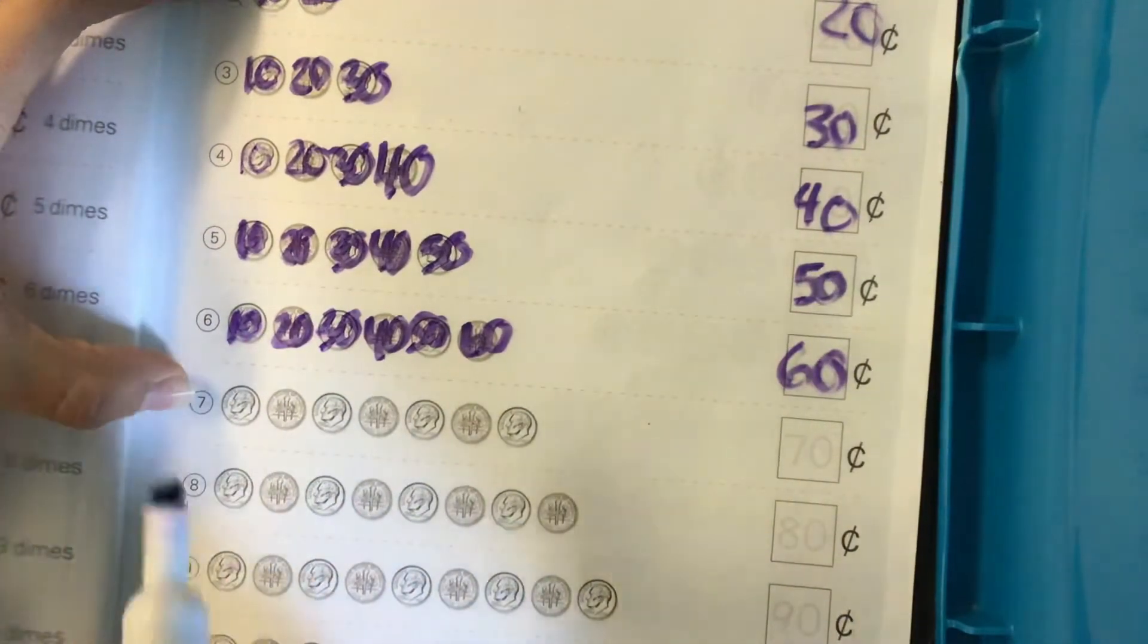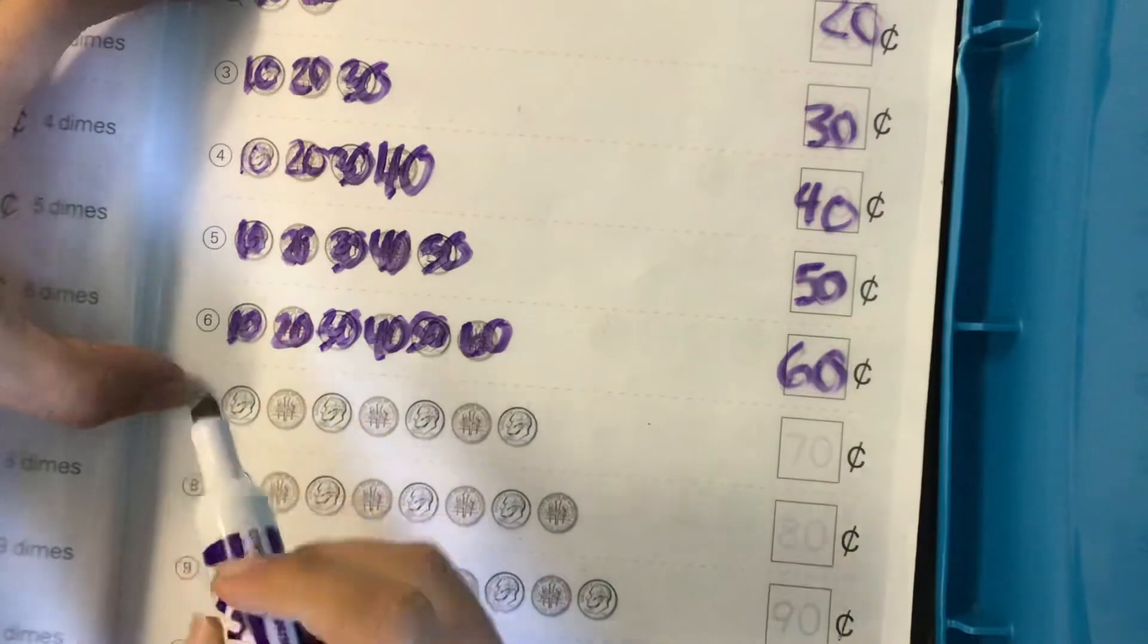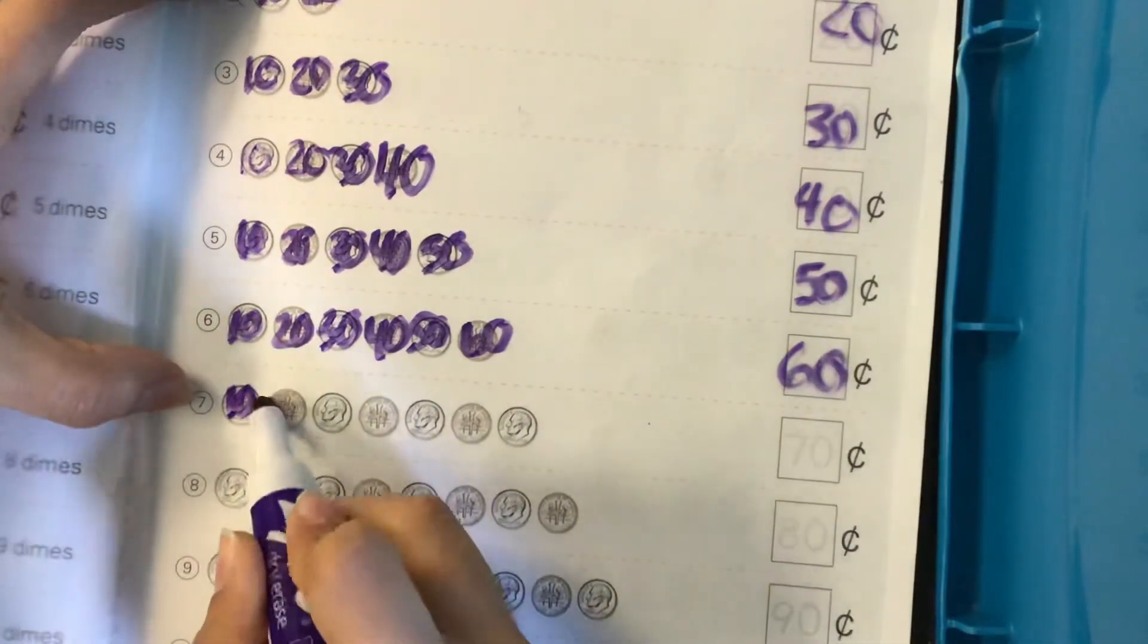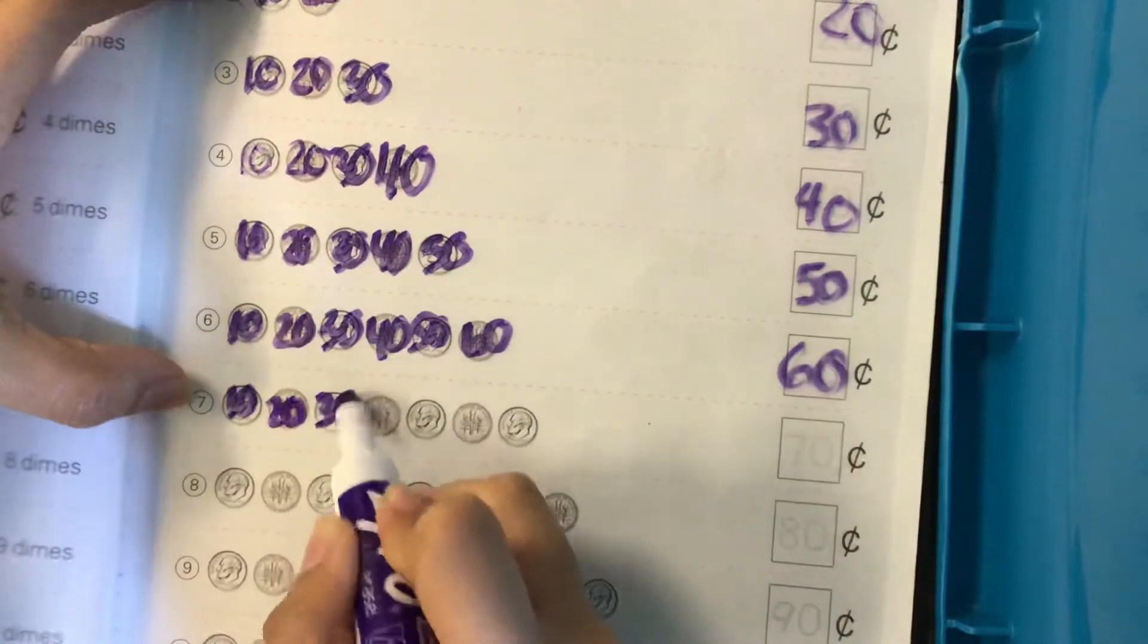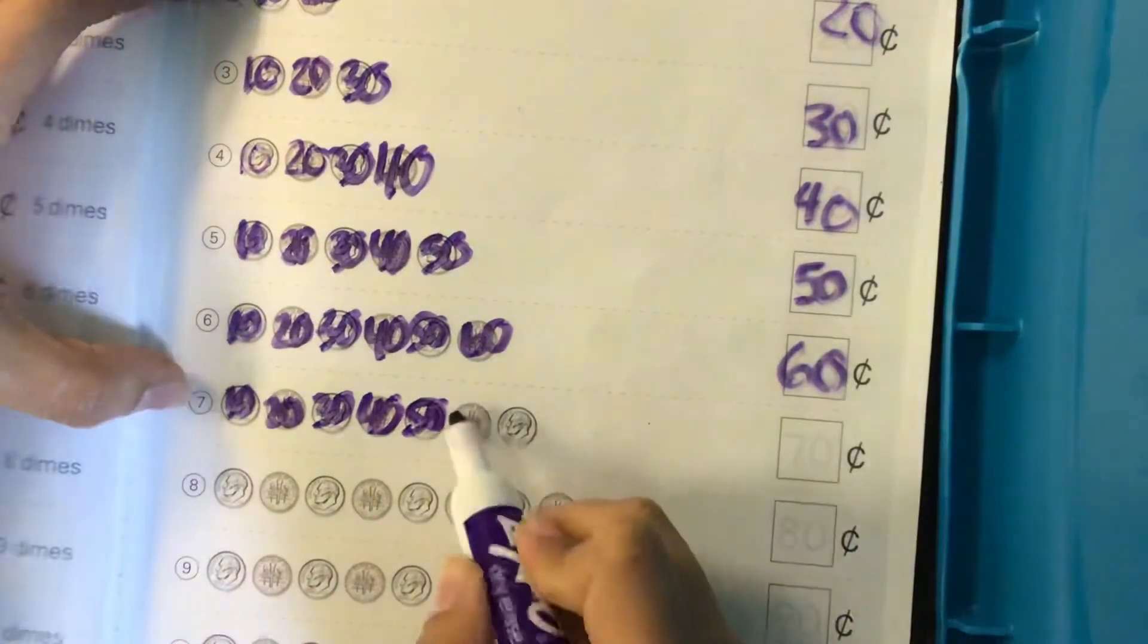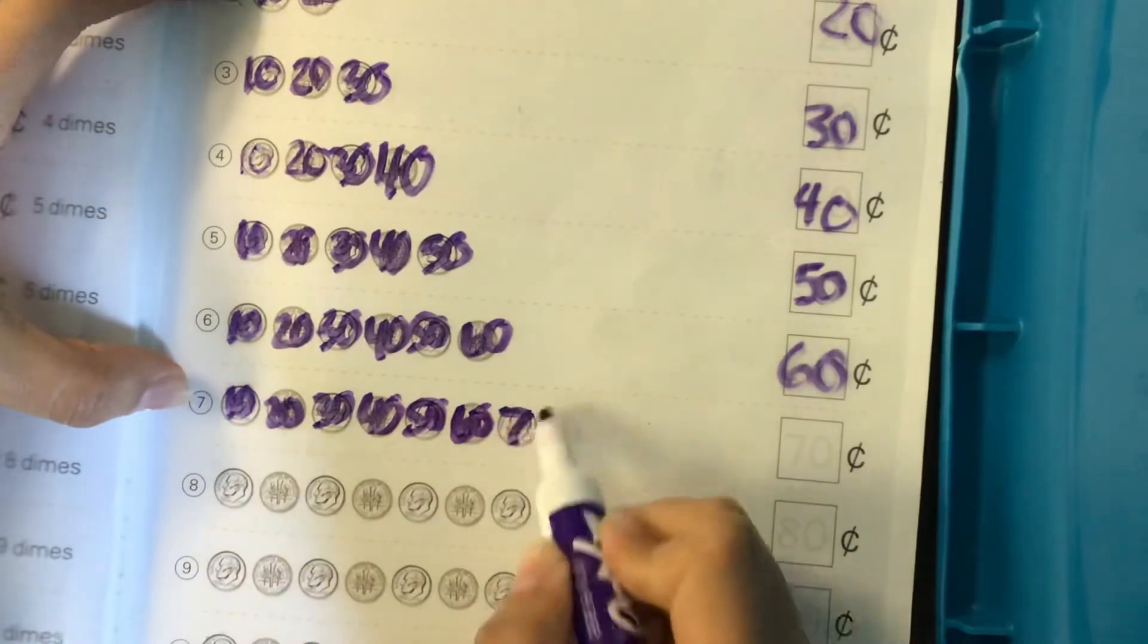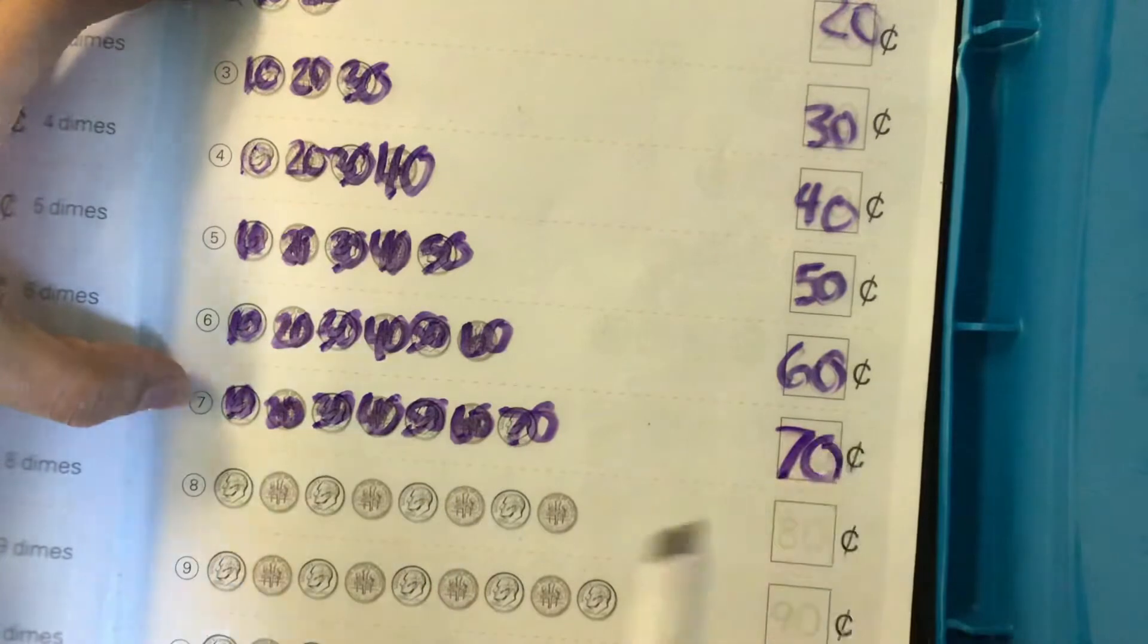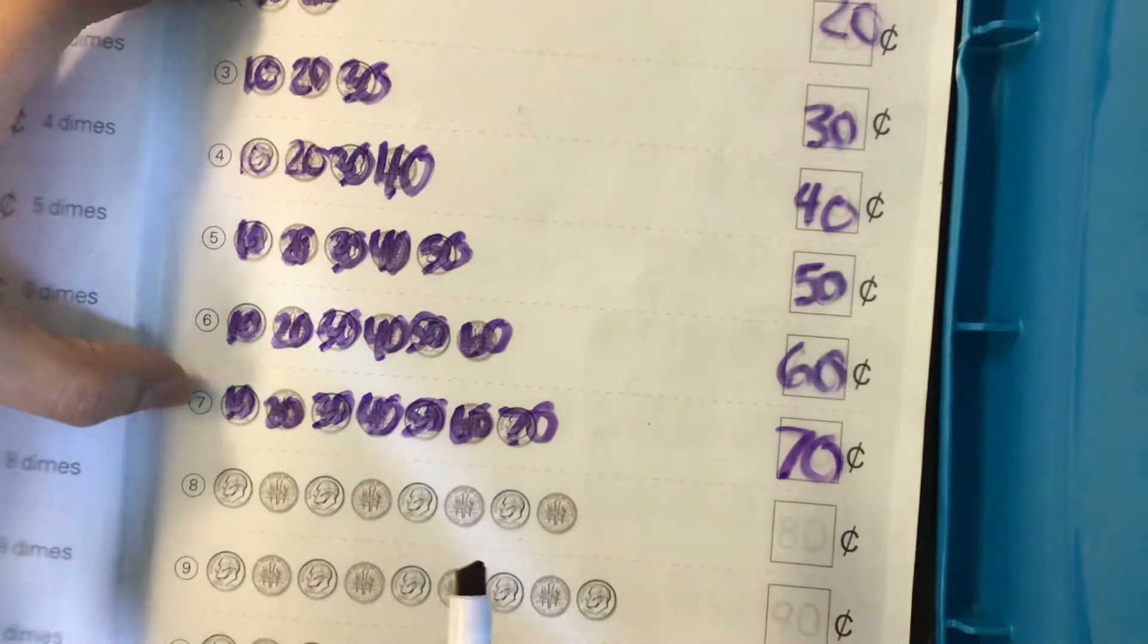Let's move on to row seven. Let's start with ten and let's skip count by ten. So ten, twenty, thirty, forty, fifty, sixty, seventy. So there are seventy cents in row seven.